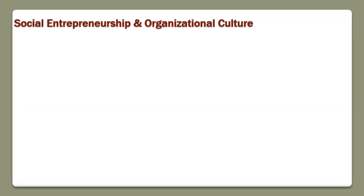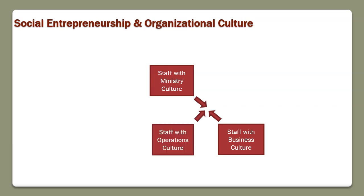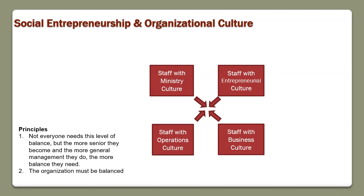Let me explain how this course fits into the big picture and your overall degree and different organization types. One of the things I found — and this is something we call the competing values framework, which we use in about half the courses in our MBA program — is that you have these tensions, these competing values between staff that have a ministry culture, staff that have a business culture, staff that have an operations culture, and staff that have an entrepreneurial culture. So the tensions across the diagonal, and each organization is going to need to have a different mix depending on what they're called to.